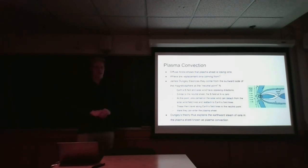And that is where I'll talk about plasma convection. So where are the replacement ions coming from? James Dungy theorizes that they come from the sunward side of the magnetosphere here at this neutral point.